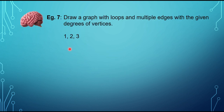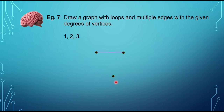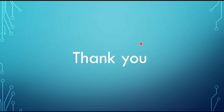Example 7: draw a graph with loops and multiple edges using degree sequence {1, 2, 3}. Use 3 dots for the 3 vertices. The first vertex has degree 1, so draw 1 line. The second has degree 2 — one is already drawn — so draw one more line. The third has degree 3 — one is already drawn — and since a loop contributes 2 degrees, draw a loop at this vertex to get 1 + 2 = 3. Hope you enjoyed the lesson. Thank you for watching, see you again next time.